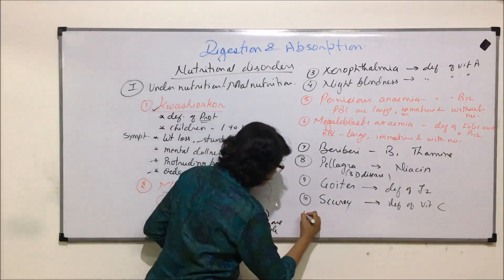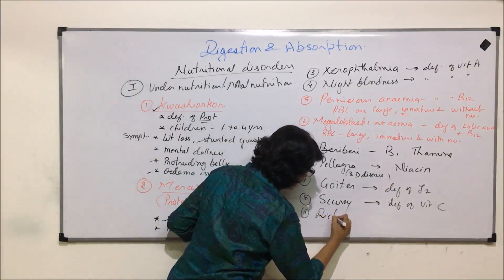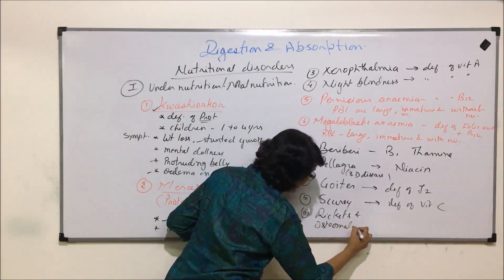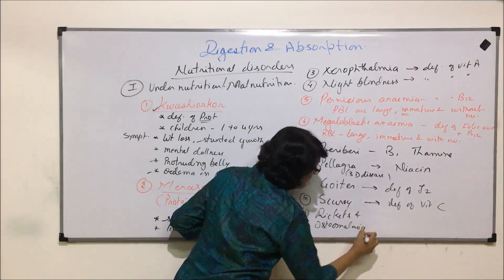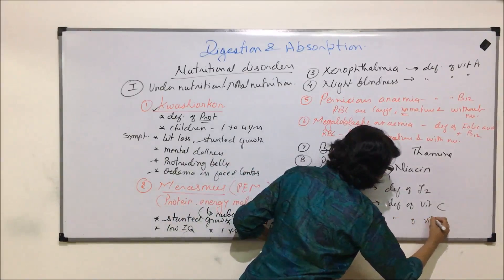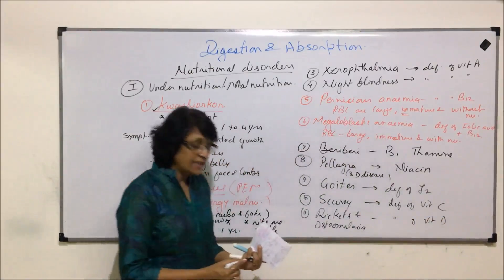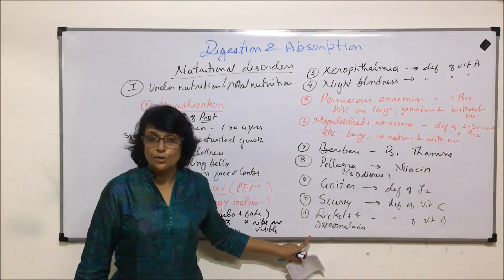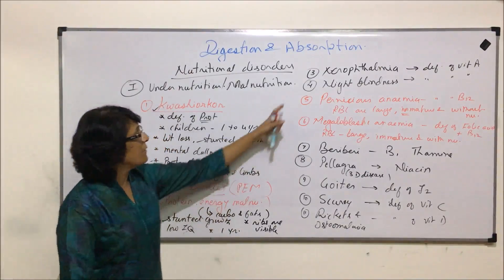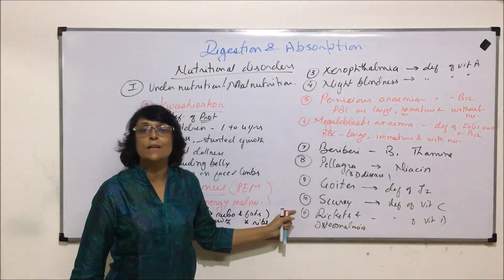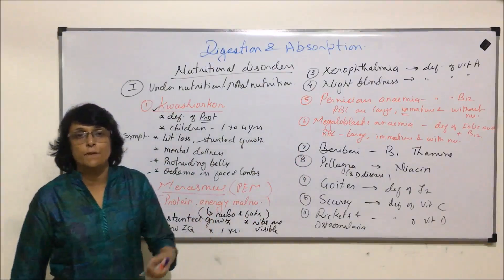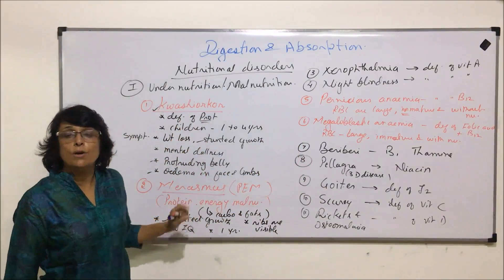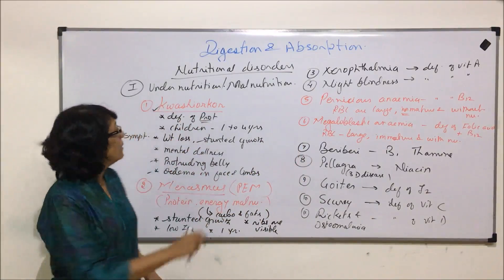Rickets and osteomalacia are due to deficiency of vitamin D. Rickets is seen in children and osteomalacia is seen in adults. We have already discussed all these diseases, so we just wrote down their names as a brief recap. The two main ones are kwashiorkor and marasmus.